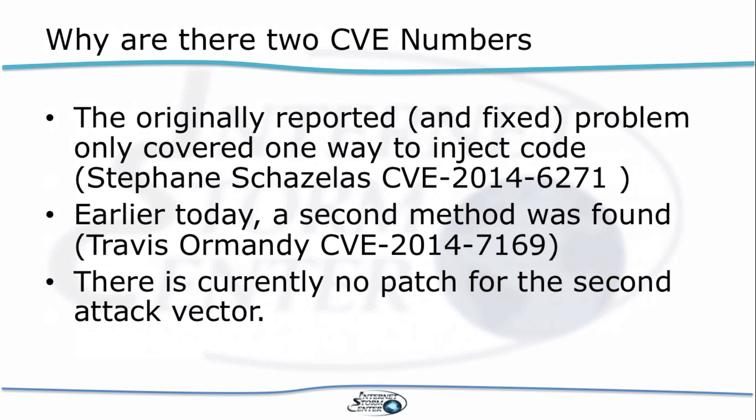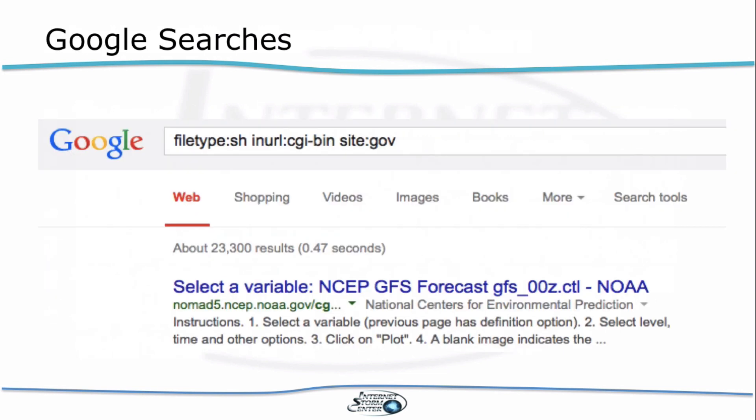Why are there two CVE numbers if there's really sort of this one root cause? It turns out the first vulnerability that was announced only really considered one way to inject code into a Bash variable. Then Travis came out with a second way how code can be injected, and this method was not patched by the patch that was released. Just for clarity, a second CVE number was assigned, but the root cause is the same — it's just two different ways to exploit this particular problem, and only one method was patched.